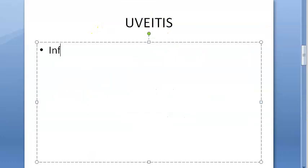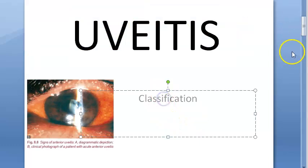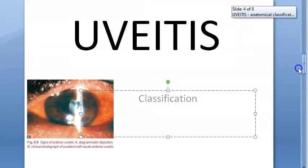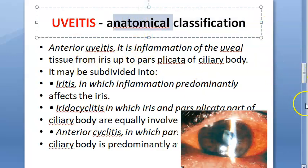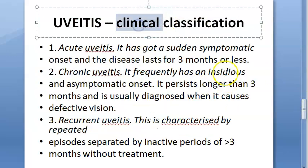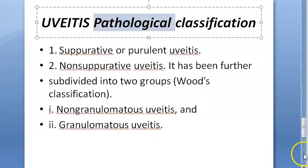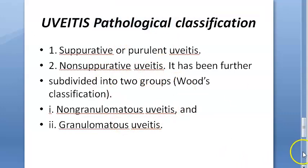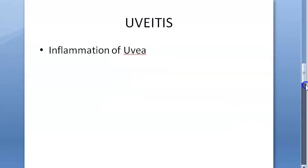Uveitis is inflammation of the uvea. Now let us look at the classification of uveitis. Classification can be done in many ways: you have anatomical classification, clinical classification — acute, chronic, etc. — pathological classification — suppurative, non-suppurative, granulomatous, non-granulomatous — and etiological classification — infective, immune, etc. Let us start with the anatomical classification.